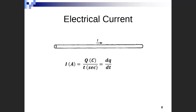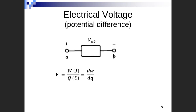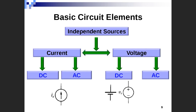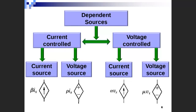This is lecture two. We talked about electrical current, which is the rate of charges per time. We talked about voltage or the potential difference, which is the work to transfer some charges between two points. Then we talked about power, which is voltage multiplied by I. We also talked about independent sources and dependent sources.